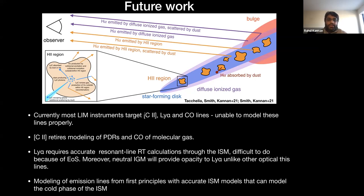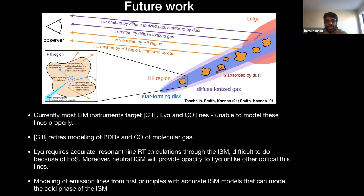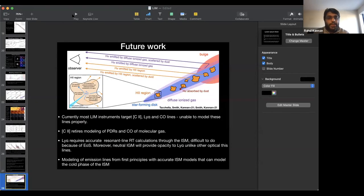The reason we cannot do C2 properly is because we cannot model PDRs and CO, since we do not have a model for molecular gas — but we are trying to correct for that now. Lyman-alpha is another problem because it is a resonant line requiring resonant line radiative transfer calculations through the ISM of the galaxy. Because we use an equation of state, this is not currently possible, but we are improving our models to make this better. Finally, we are also trying to make emission line predictions from first principles with accurate ISM models that can model the cold phase of the ISM — for example, using the SMUGGLE model, which Federico has also worked on. Thank you.